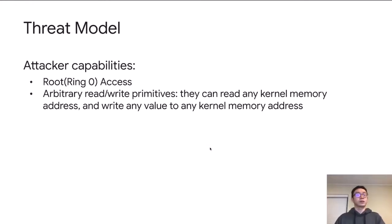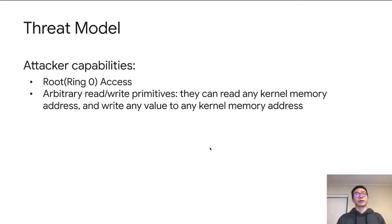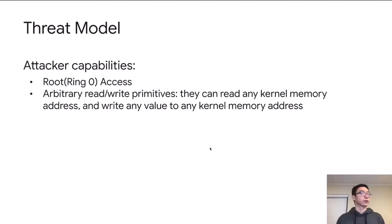So let's talk about the threat model here. We assume the attacker has the following capabilities: it can gain ring zero access, it can have arbitrary read and write permissions — meaning it can read any kernel memory address and write any value to any kernel memory address.